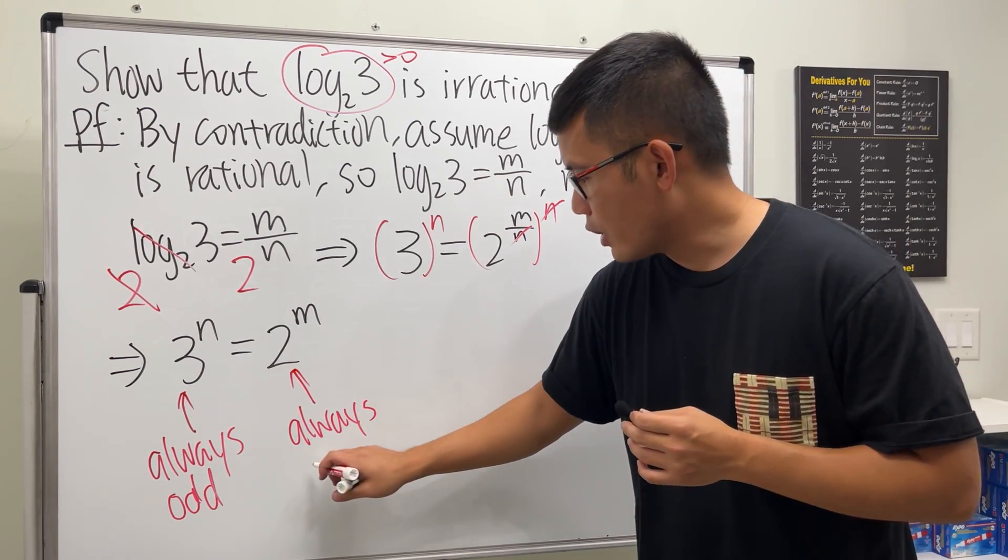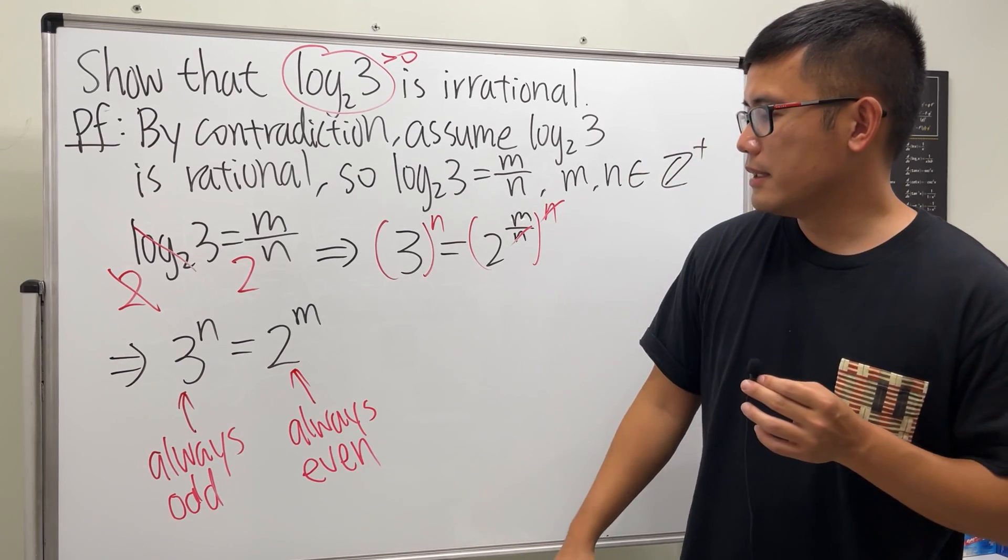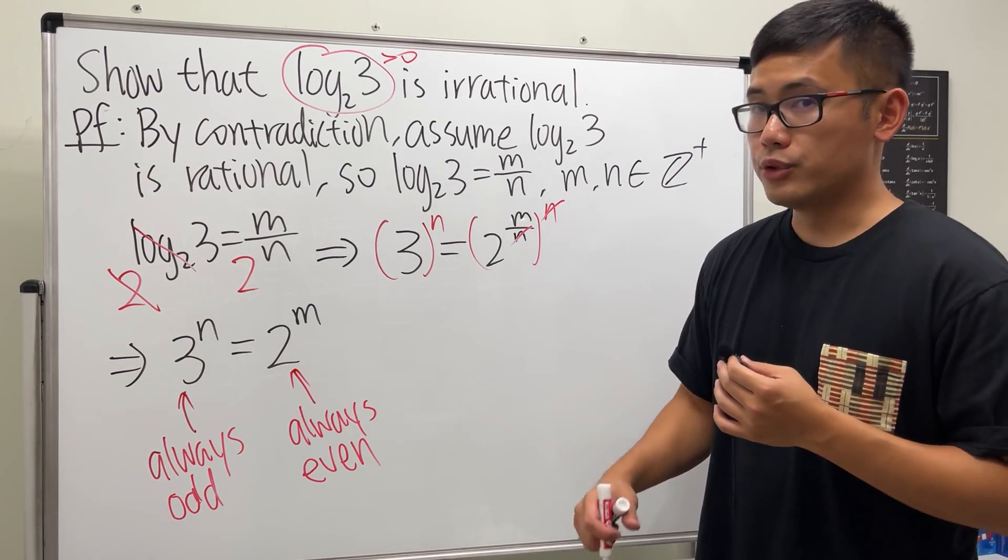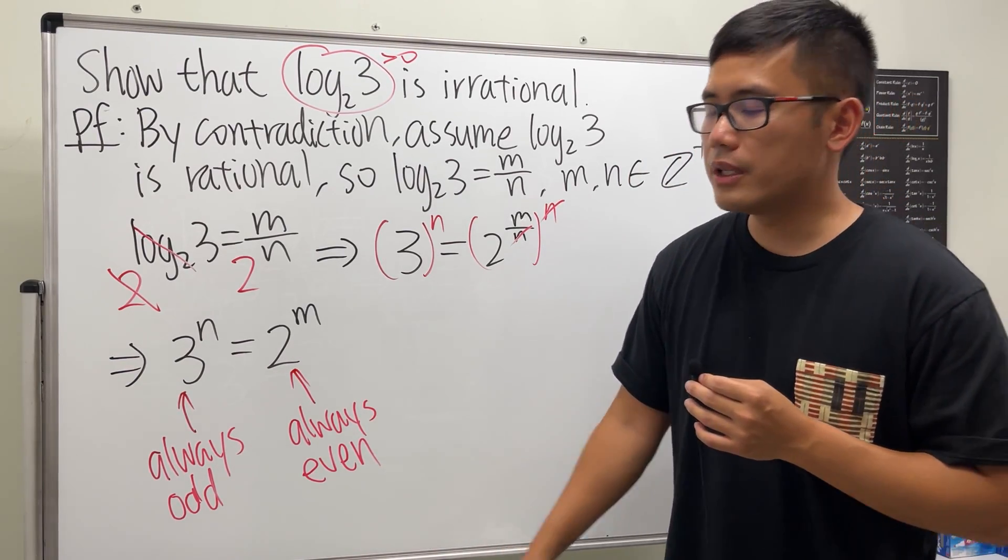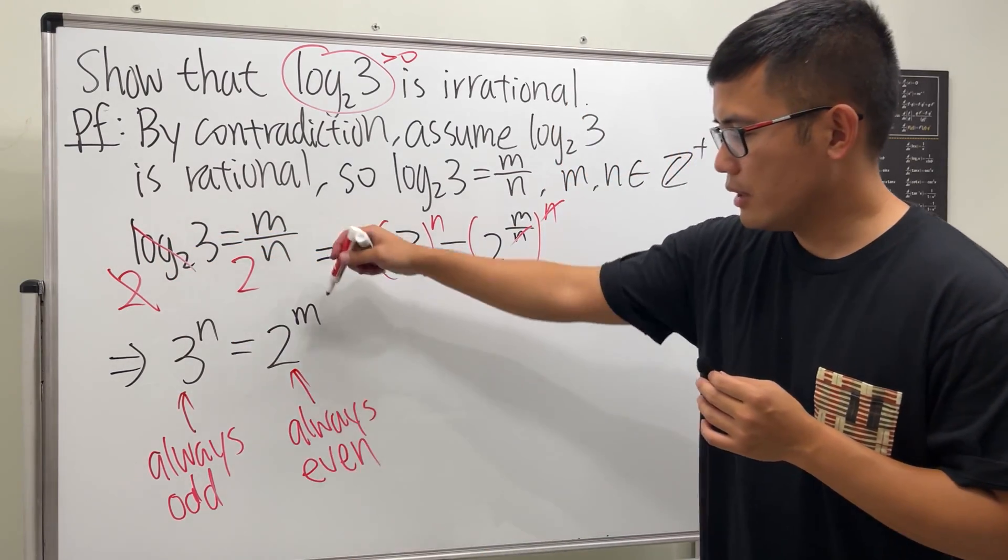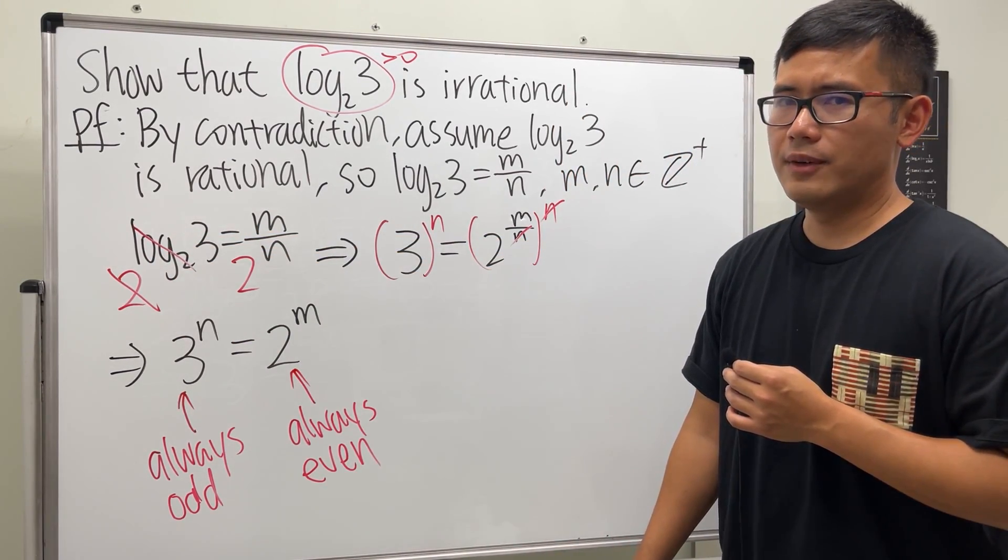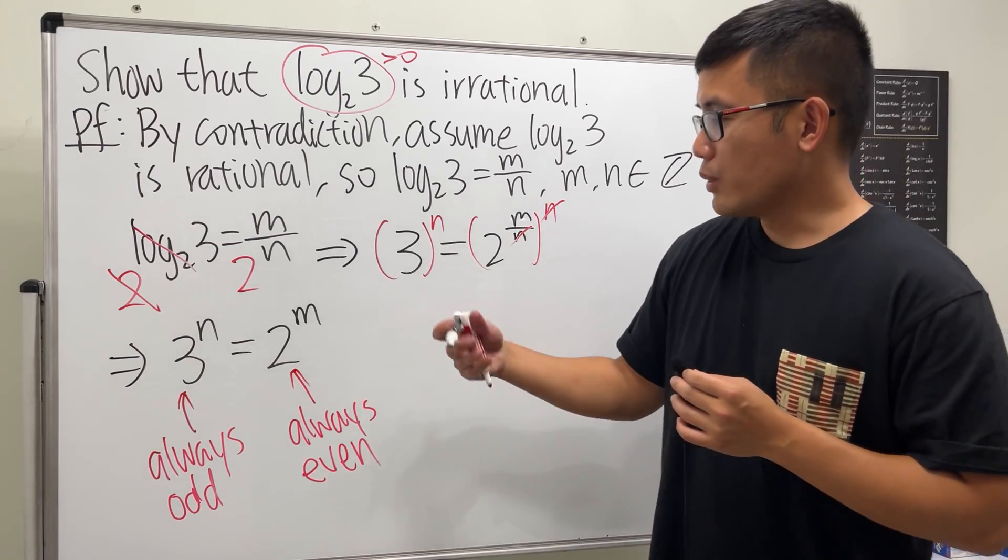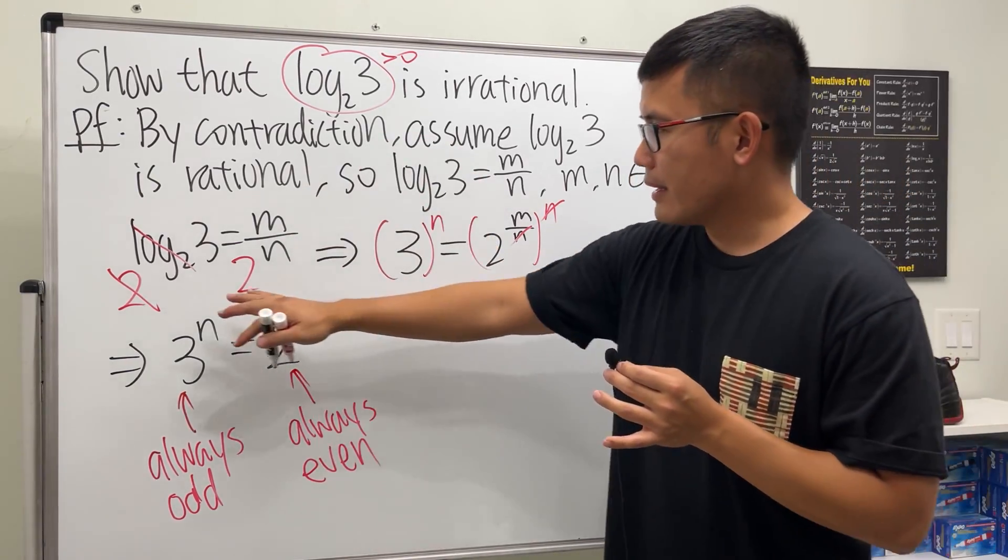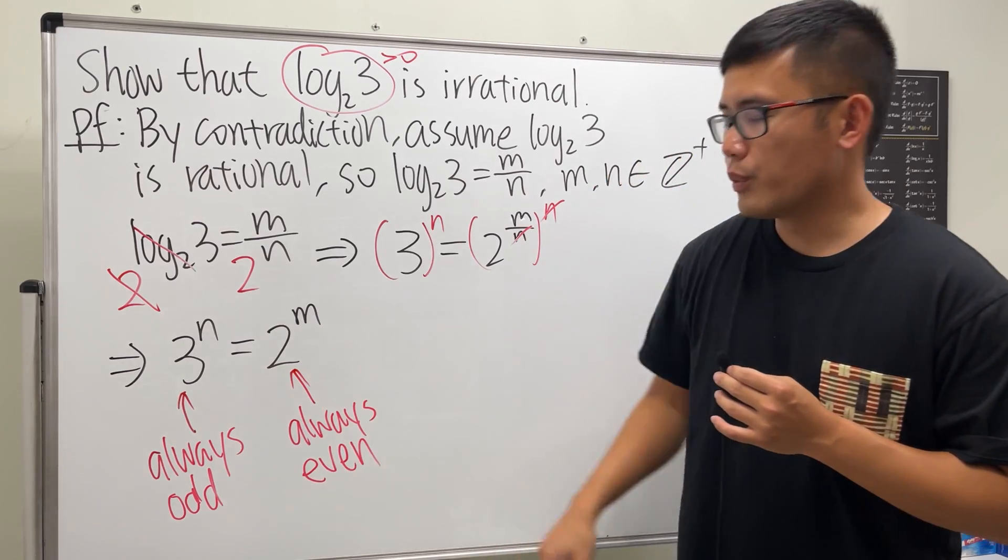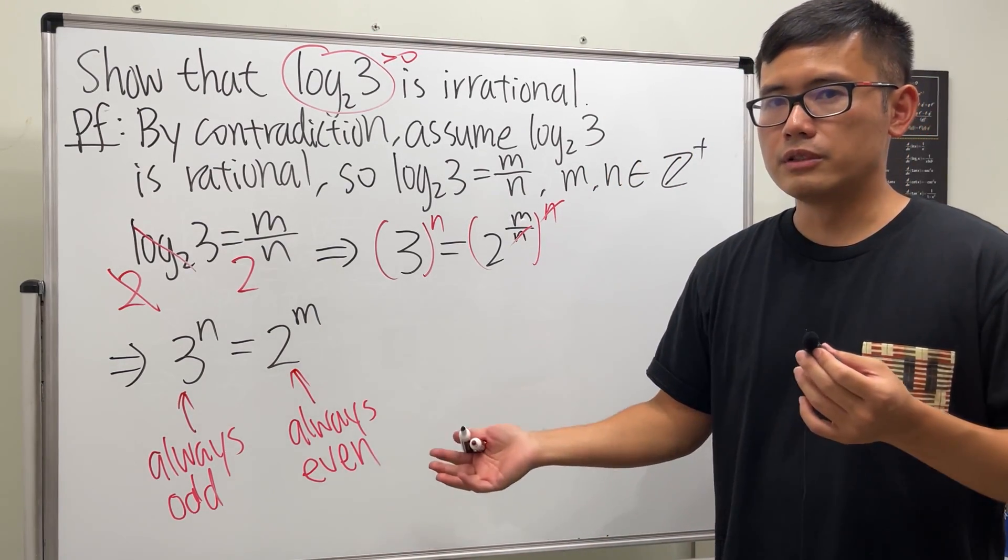So this is a pretty common way to show that we have a contradiction, because the left-hand side is always odd. Of course, it can never be an even number, right? So we are done when you see this—this is always odd, this is always even. Okay, it's so wrong, right?